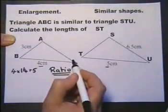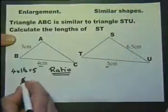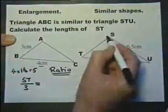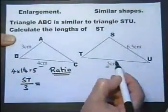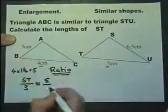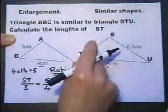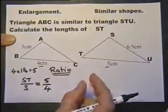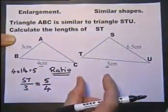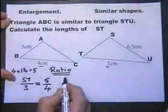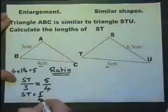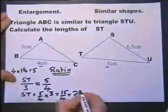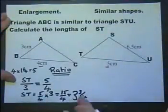I want to find the length ST, so I write: ST over its corresponding side equals, going from this triangle to this triangle, five over four. The length of ST to the length of AB equals the length of TU to the length of BC. If I multiply both sides by three, I get ST equals five over four multiplied by three, which is fifteen over four — that's three and three quarters. I suggest that is easier than messing about with fractions directly.